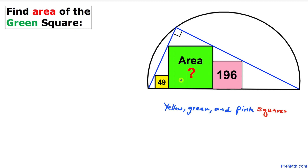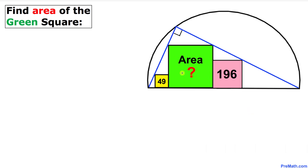Welcome to pre-math. In this video tutorial we have got three squares stacked inside a right triangle, which in turn is placed in a semi-circle. The area of the yellow square is 49, the area of the pink square is 196, and we are going to calculate the area of the green square. Let's get started with the solution.